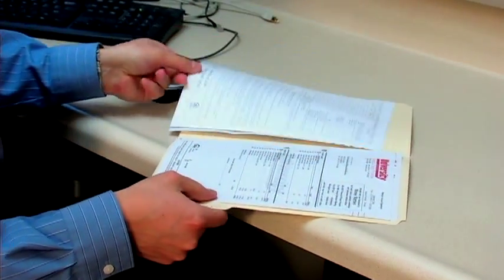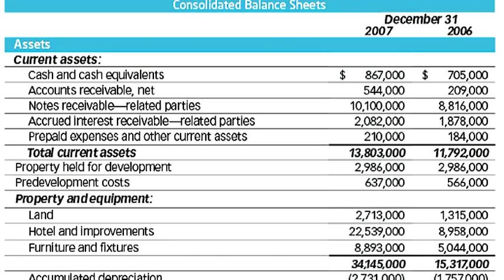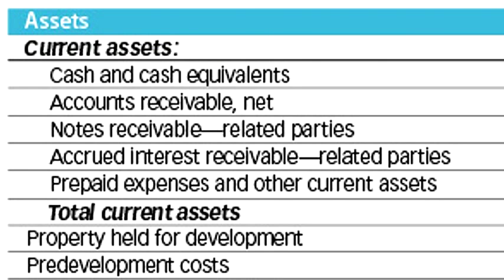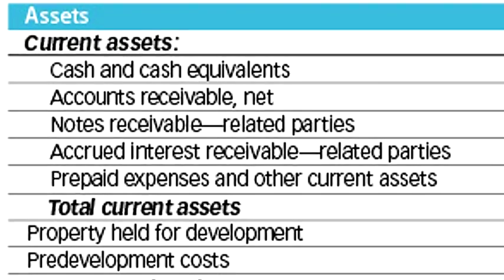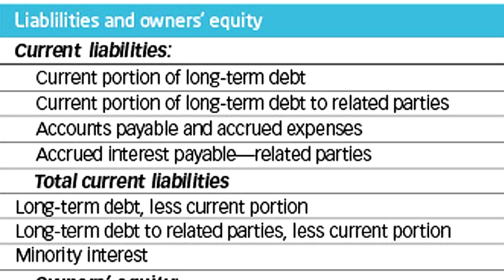A balance sheet is made up of three main components. First of all, assets, which contains everything that a company owns, including all of the cash in its accounts, its computer equipment, its building, and inventory — anything else that the company owns that was legitimately in their possession.